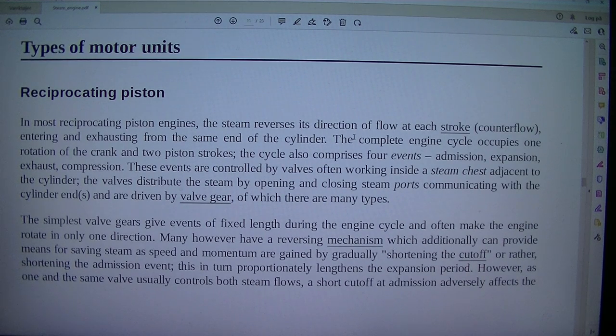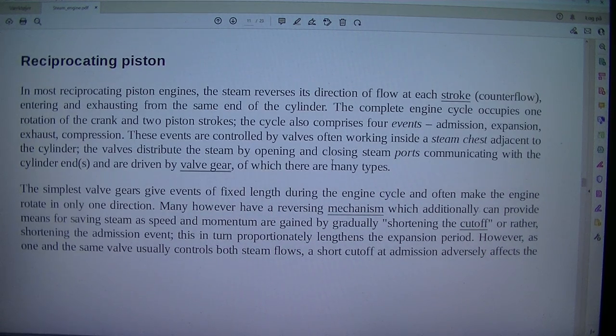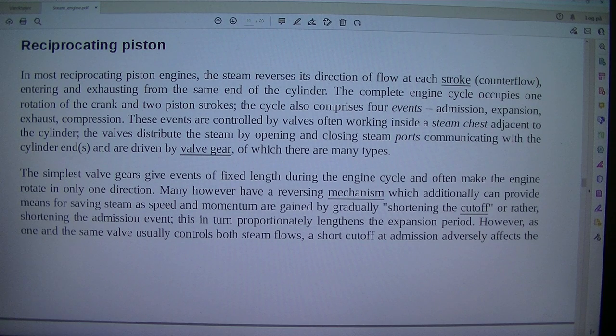Types of motor units. Reciprocating piston. In most reciprocating piston engines, the steam reverses its direction of flow at each stroke, counterflow, entering and exhausting from the same end of the cylinder. The complete engine cycle occupies one rotation of the crank and two piston strokes. The cycle also comprises four events: admission, expansion, exhaust, compression. These events are controlled by valves often working inside a steam chest adjacent to the cylinder. The valves distribute the steam by opening and closing steam ports communicating with the cylinder end and are driven by valve gear, of which there are many types. The simplest valve gears give events of fixed length during the engine cycle and often make the engine rotate in only one direction.